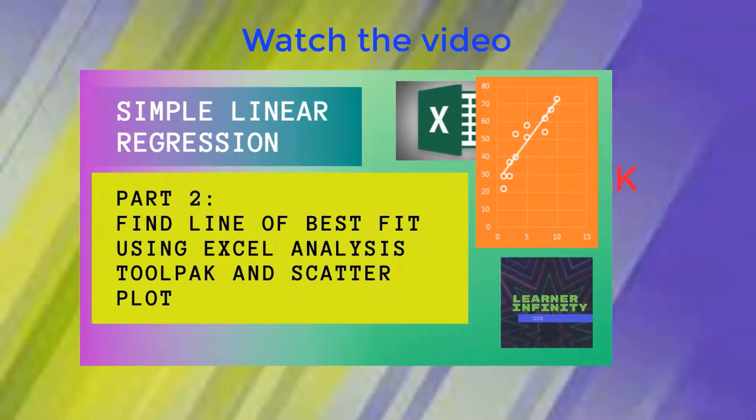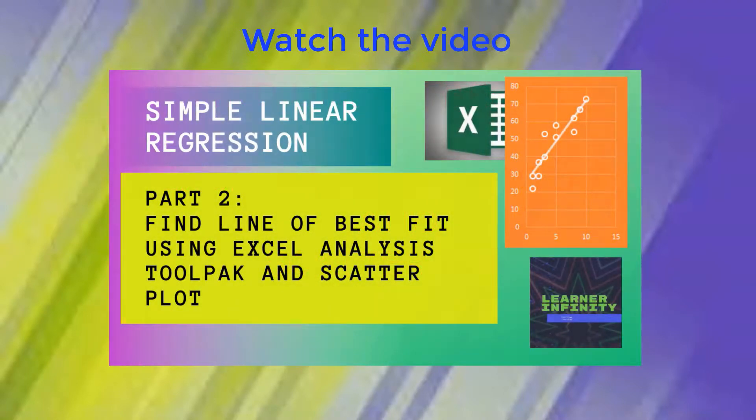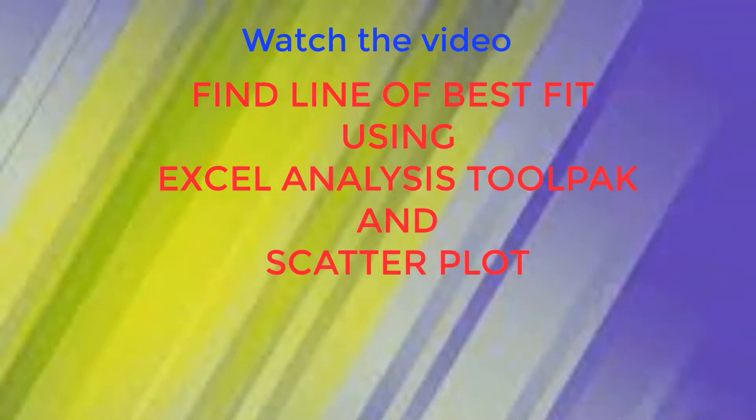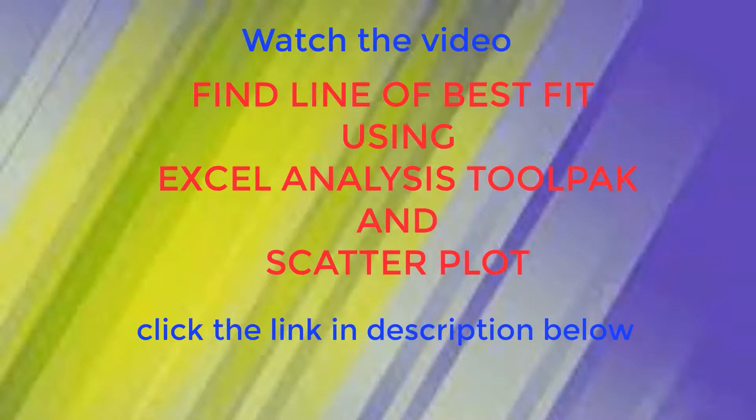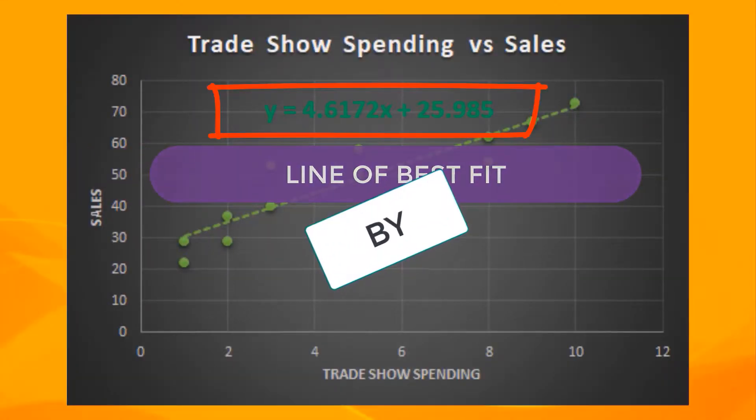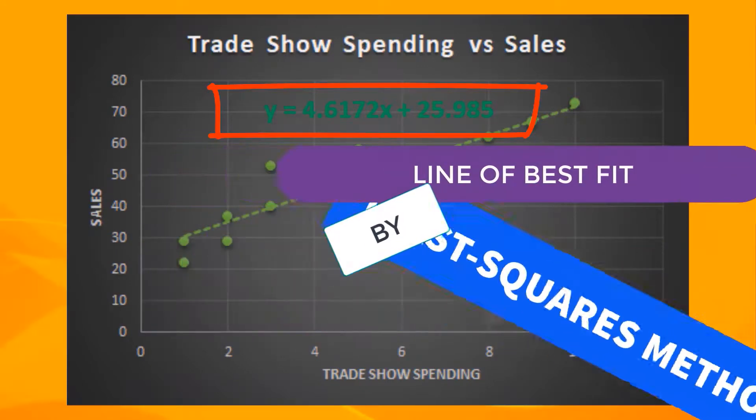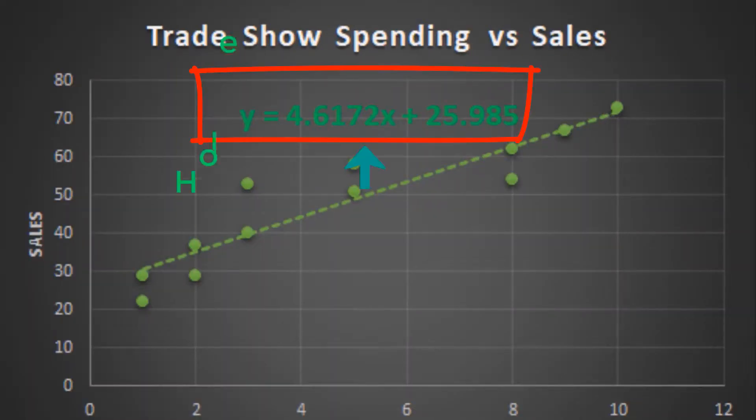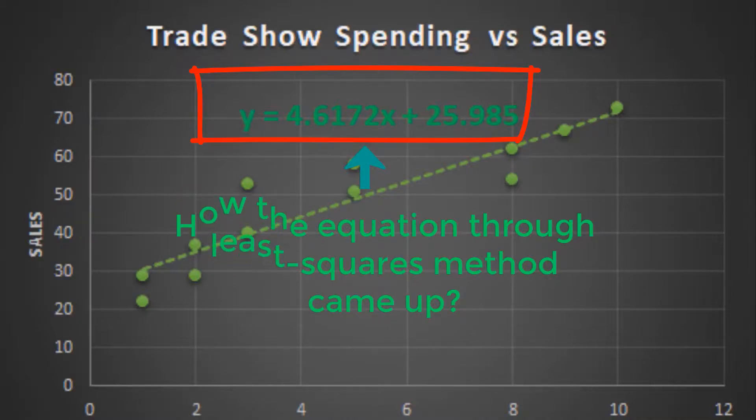You can watch the video on finding line of best fit using Excel Analysis ToolPak and Scatterplot. The link is in the description below or you can click on the end screen. This equation of line of best fit was obtained using the least-squares method. So the goal of this video is to explain how this equation came up.